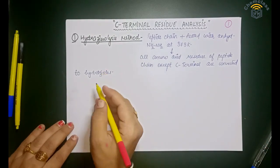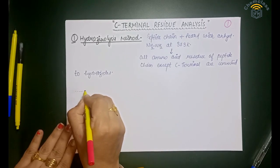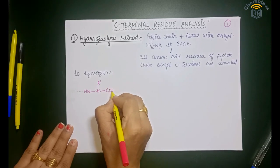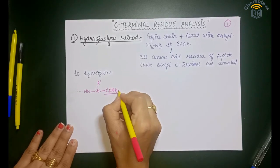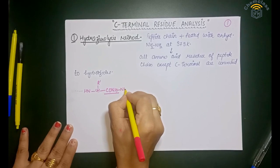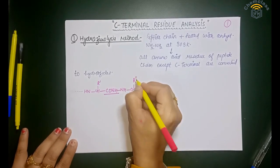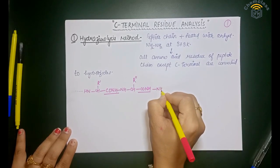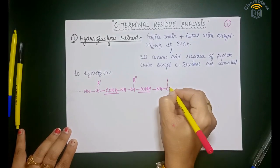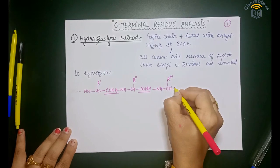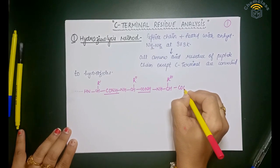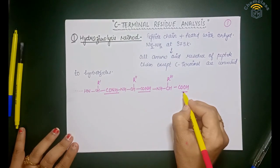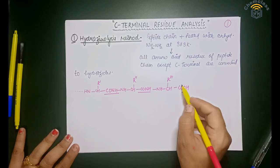Let me show this with a structure. We take a long peptide chain: NH-CHR¹-CO-NH — this is a peptide linkage — then CHR²-CO-NH — peptide linkage — third amino acid CHR³ — and then COOH. This COOH is the C-terminal of the peptide chain.